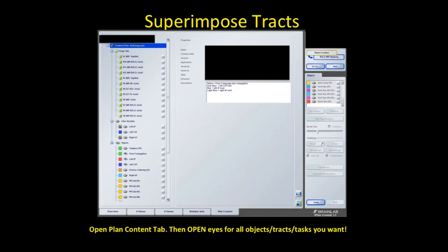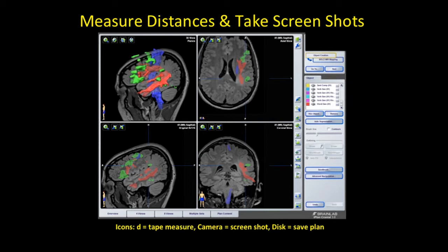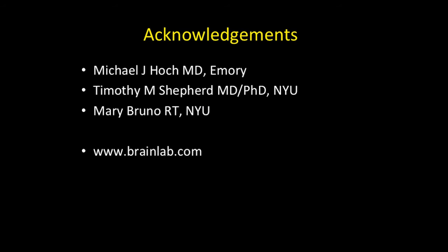For completeness, we can superimpose our DTI tractography. Open planned content and open the eye icon for the tracks you have created. You can superimpose the arcuate fasciculus in red, the language track and the motor track, and the cortical spinal tract in blue onto your conjunction language data. With Brain Lab, you can measure distances of the 3D objects to the margins of the lesion — whether it's a cortical dysplasia, AVM, tumor, or cavernous malformation. The icon labeled D is the tape measure; screenshot is a camera. When you're done, save your plan with the disk icon. Thank you, see you next time.